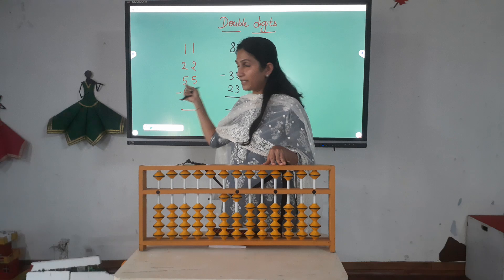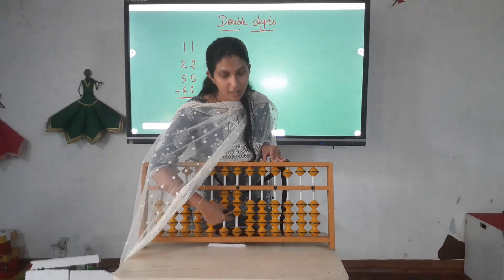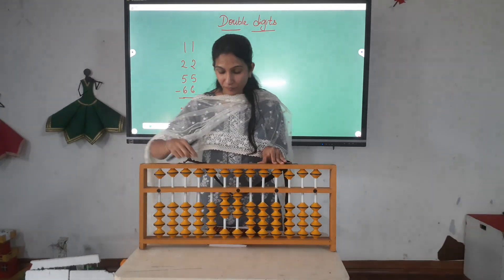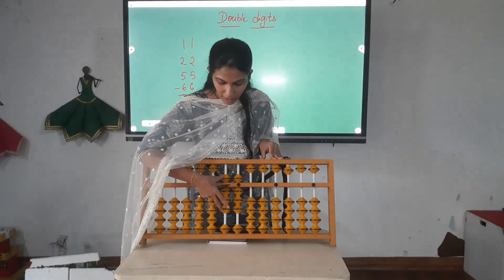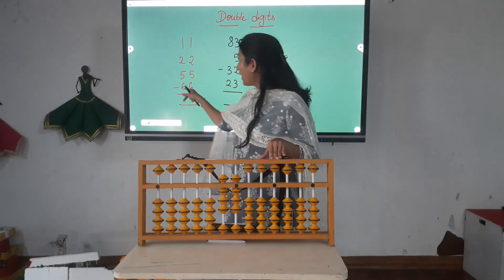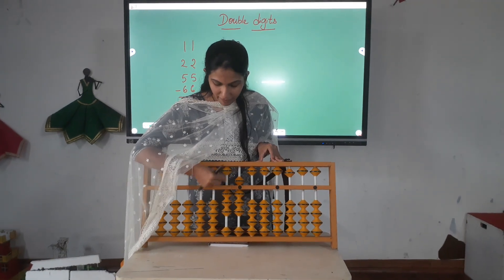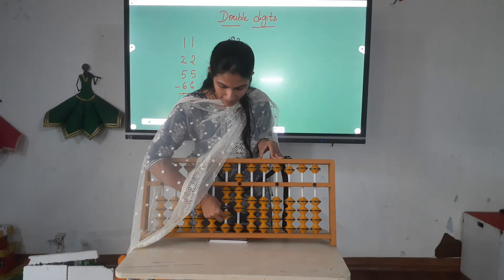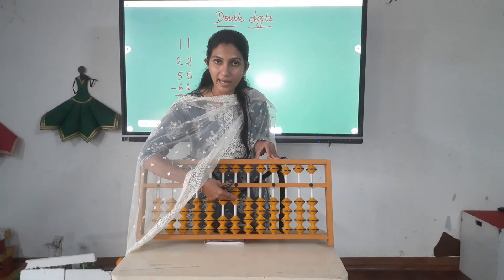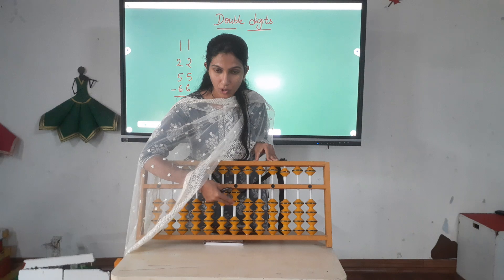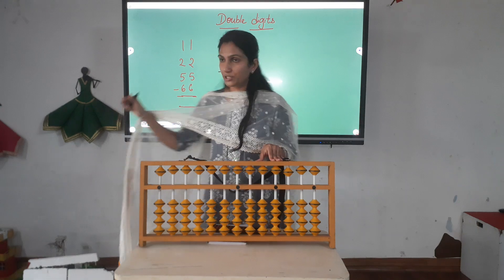So this is 11. And then 22 — push 2 beads here and 2 beads here. Then 33, and then 55 — so this is 50 and this is 5. 55 becomes 88, and then it is less 66. So this is 5 and this represents 1 bead, so less 6 from here and less 6 here also. You got the answer as 22. Only the beads touching the center bead have a value, so the answer is 22.